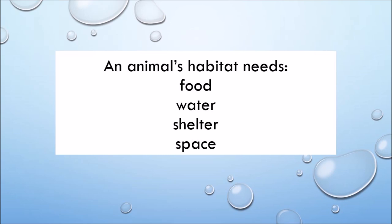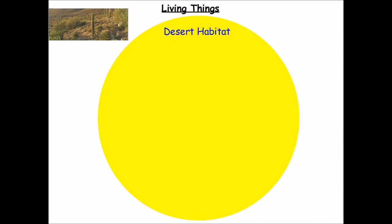As I watched the video, I took notes. An animal habitat needs food, water, shelter, and space. Let's look closely at the desert habitat. I'm going to take notes while we watch.